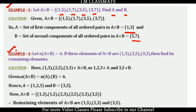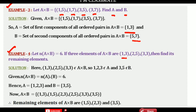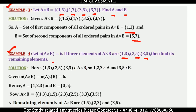Example 4. Let the cardinality of A cross B be equal to 6, meaning A cross B has 6 elements. If 3 elements of A cross B are (1, 3), (2, 5), and (3, 3), then find its remaining elements.